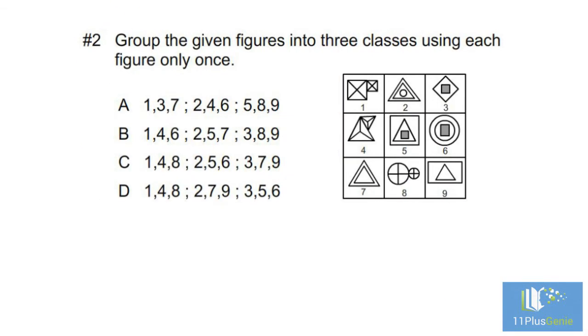Number two: group the given figures into three classes using each figure only once. In figure one, we have two identical shapes of different sizes attached to each other. This same arrangement is in figures four and eight. Group one is figures one, four, and eight.